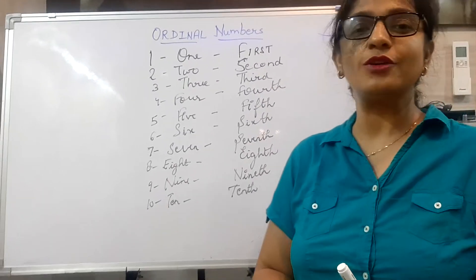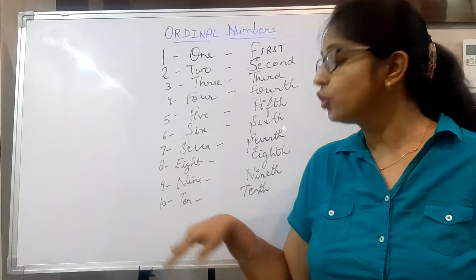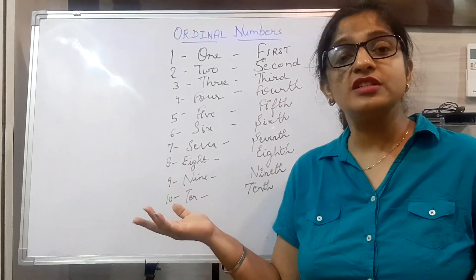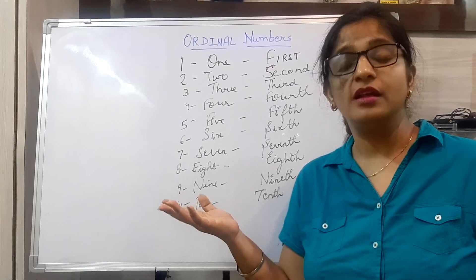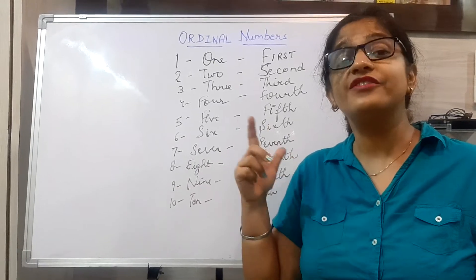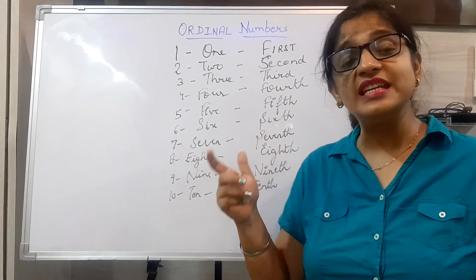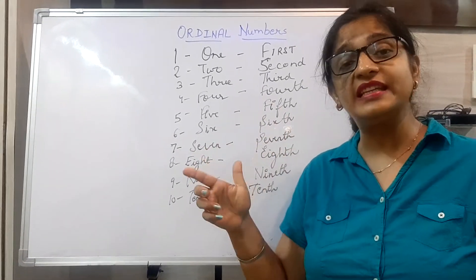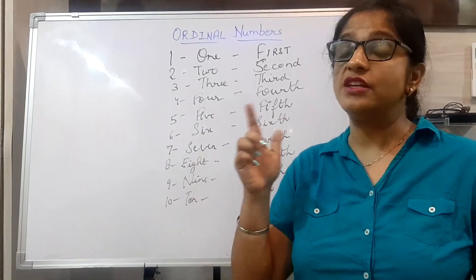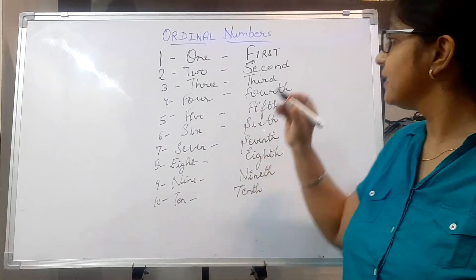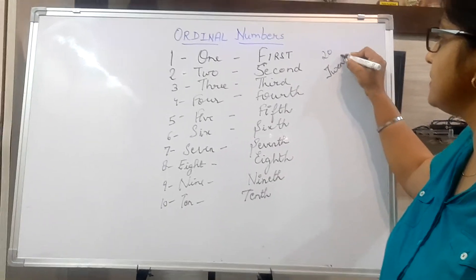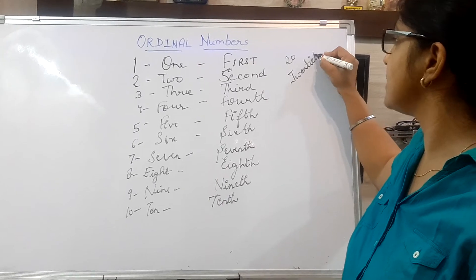So this is ordinal numbers from 1 to 10. Similarly, we go ahead: 11 is 11th, 12 is 12th — T-W-E-L-F-T-H, 13 is 13th, 14 is 14th, 15 is 15th, 16 is 16th, 17 is 17th, 18 is 18th, 19 is 19th, and 20 is 20th — T-W-E-N-T-I-E-T-H.